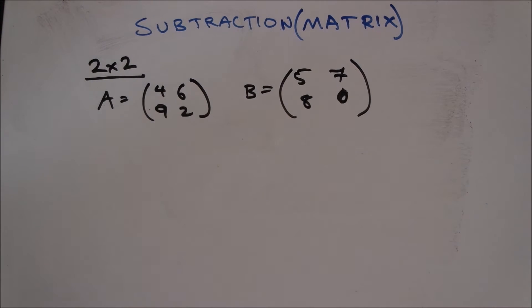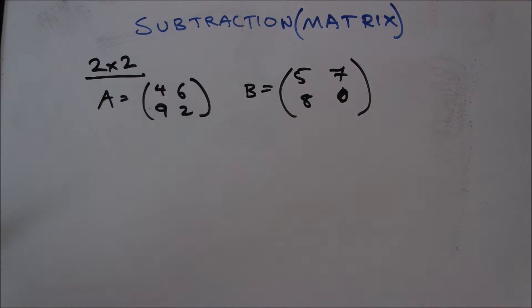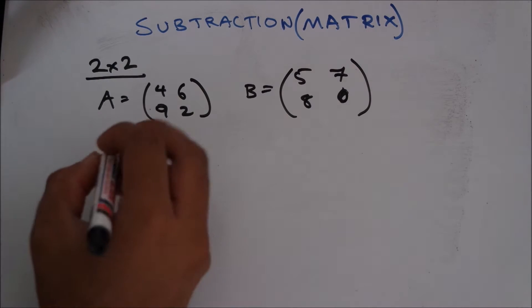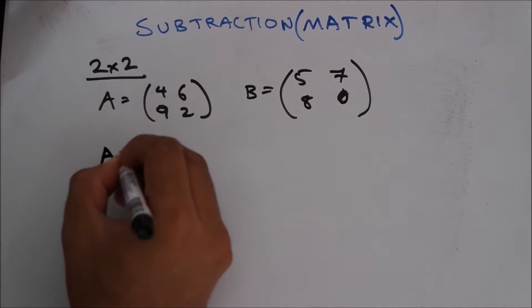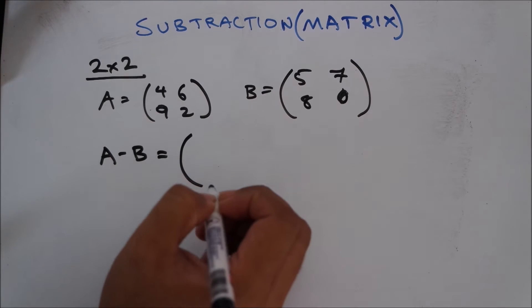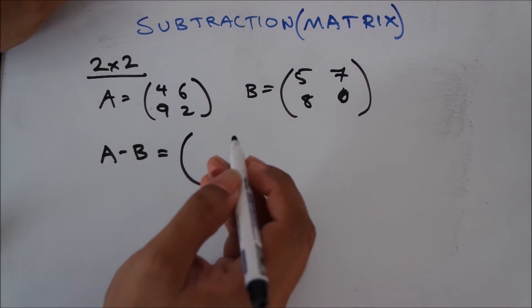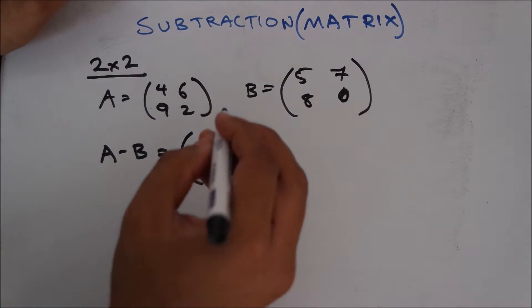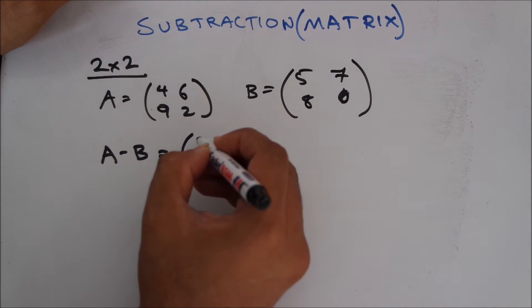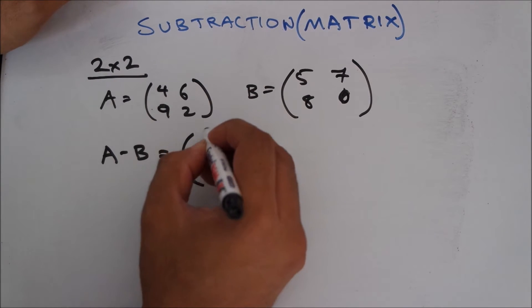Let's say we have a 2 into 2 matrix where A equals 4, 6, 9, and 2, and B equals 5, 7, 8, and 0. So you were asked to subtract B from A. So A minus B would be, the rule is pretty simple as well, you just have to follow the rule that you followed during addition. Here instead of adding them up, you just subtract one from another.